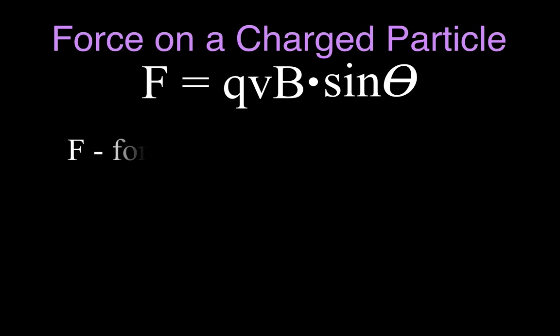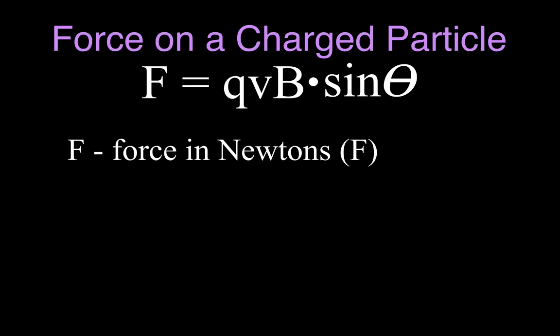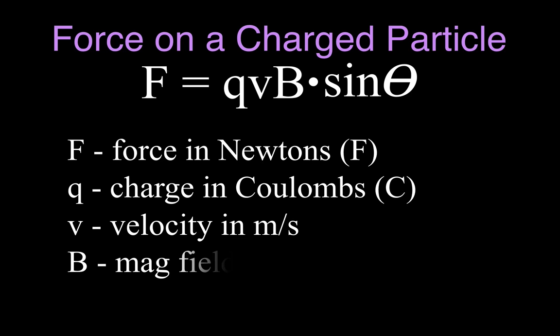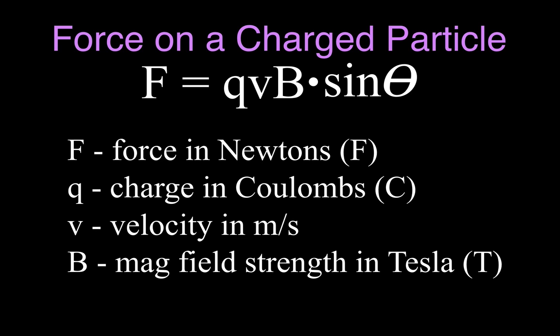This is the equation we use to calculate the magnitude of the force: F is the force measured in newtons, Q is the charge which must be measured in coulombs — not micro or millicoulombs, but coulombs — V is the velocity measured in meters per second, and B is the magnetic field strength measured in teslas. All those must be in the base units, and then we have the sine of theta, which we'll talk about in just a moment.